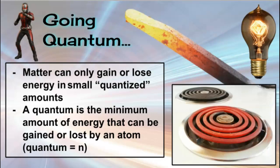A quantum is the minimum amount of energy that can be gained or lost by an atom. When you see this in relation to Bohr models, you're going to have the quantum equal to an n.